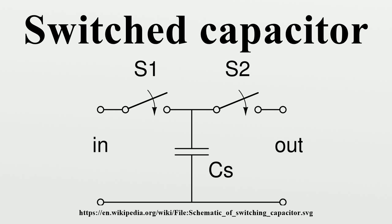Thus, the charge moved out of the capacitor to the output is ΔQ = CS·(V1 − V2). Because this charge Q is transferred at a rate F, the rate of transfer of charge per unit time is I = ΔQ·F. Note that we use I, the symbol for electric current, for this quantity. This is to demonstrate that a continuous transfer of charge from one node to another is equivalent to a current.